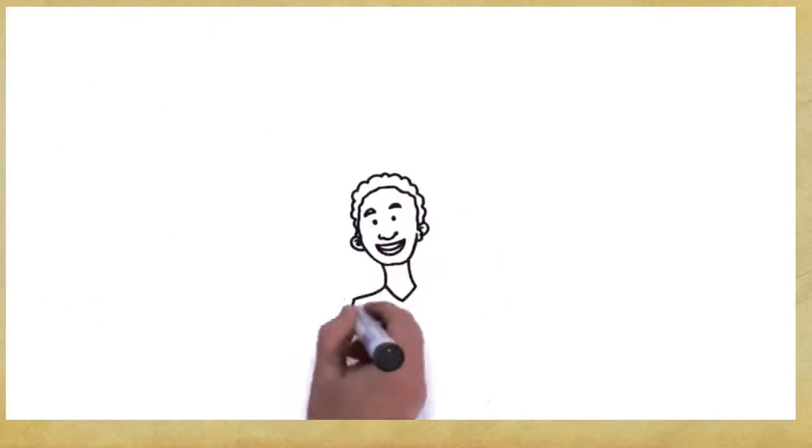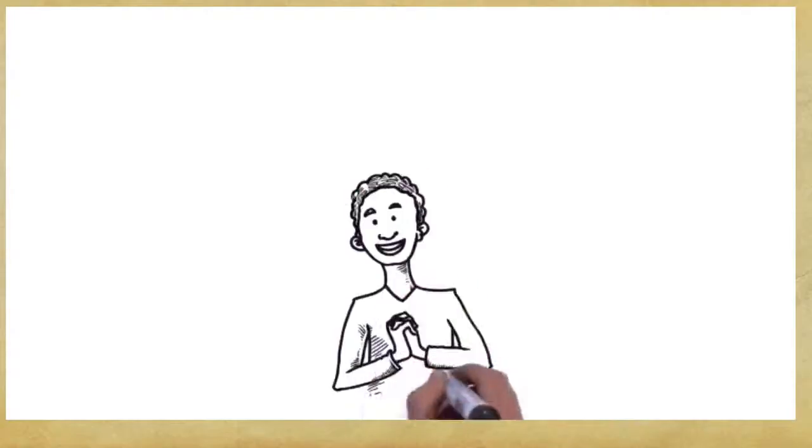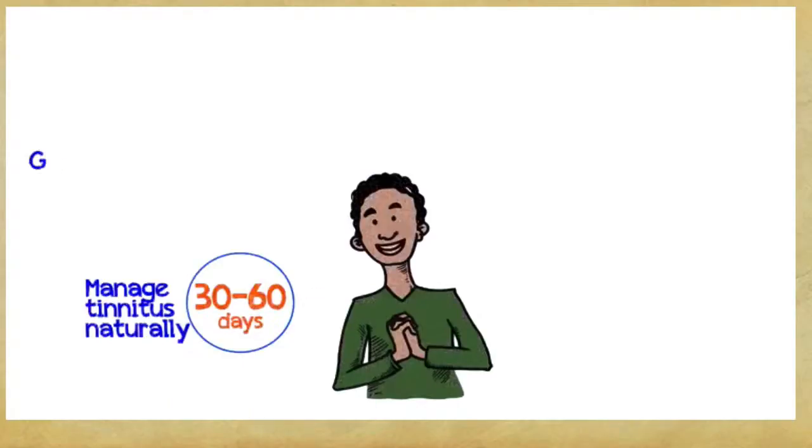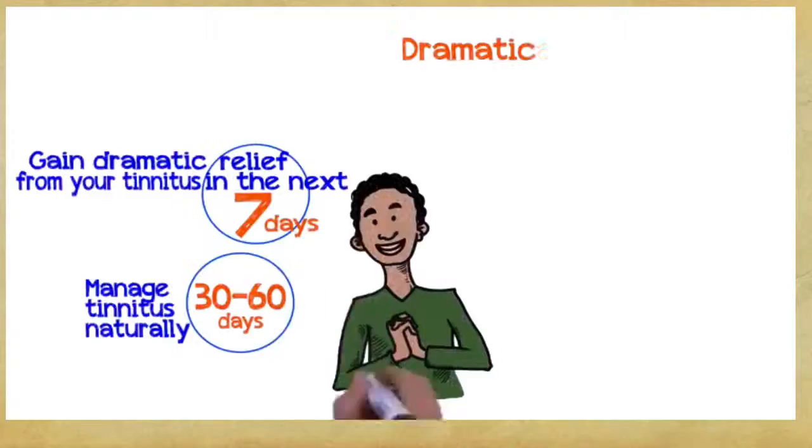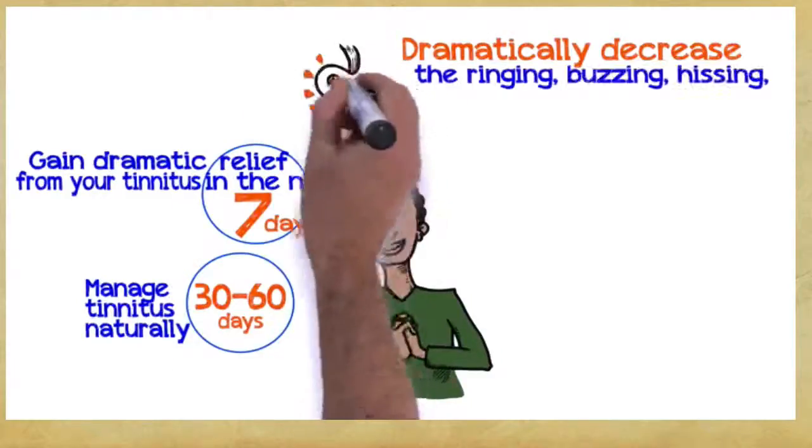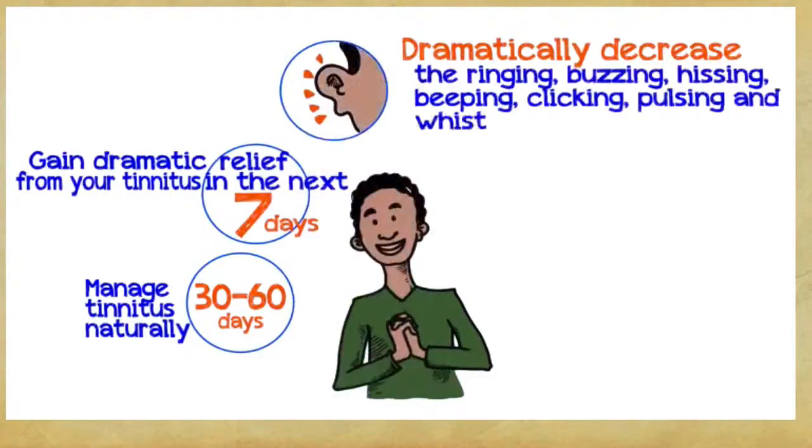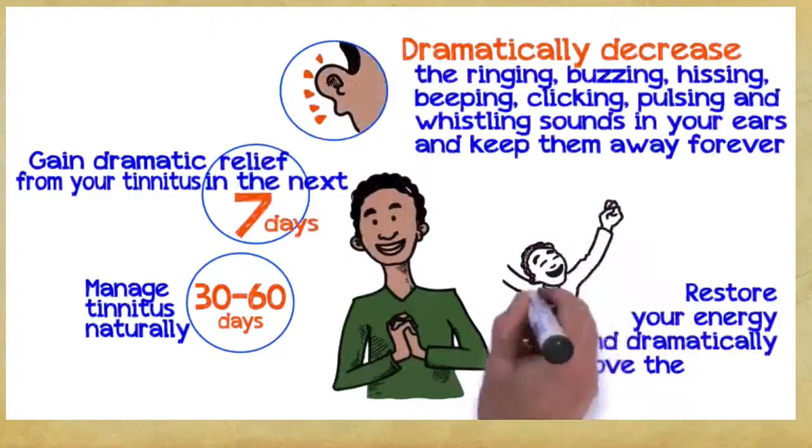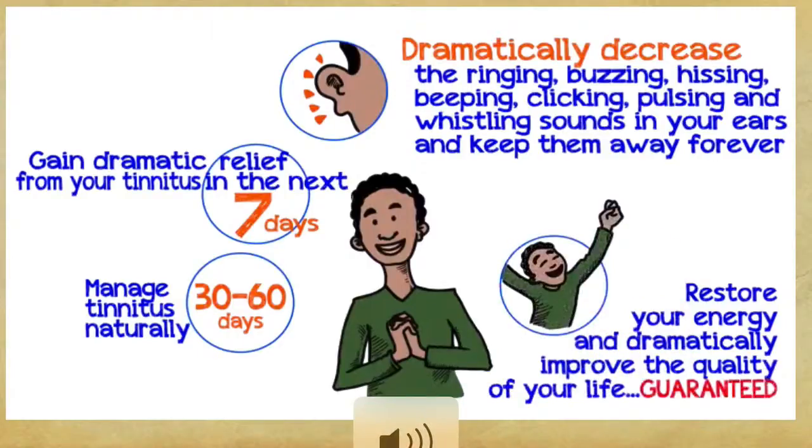What can you gain if you embrace these three principles? You can manage tinnitus naturally within 30 to 60 days, gain dramatic relief within seven days, dramatically decrease the ringing, buzzing, hissing, beeping, clicking, pulsing and whistling sounds in your ears, restore your energy and improve your quality of life, guaranteed.